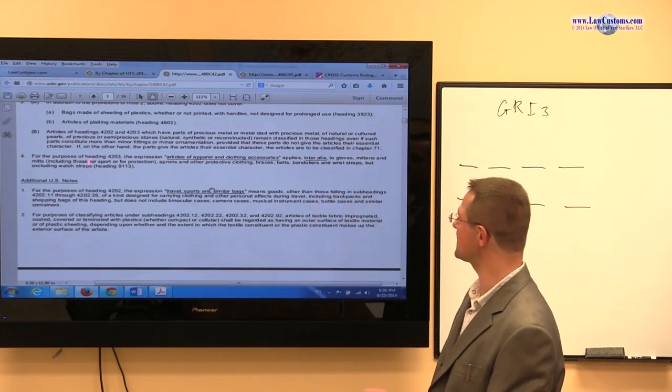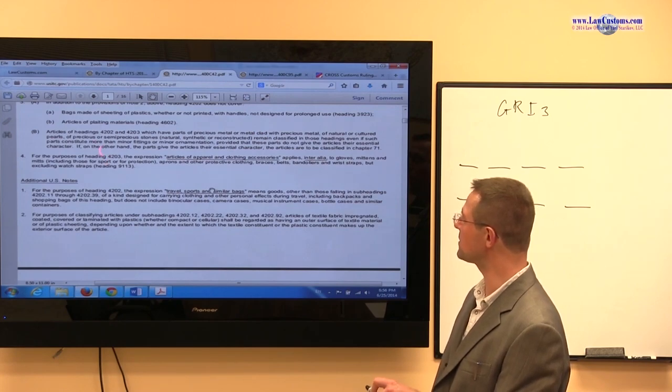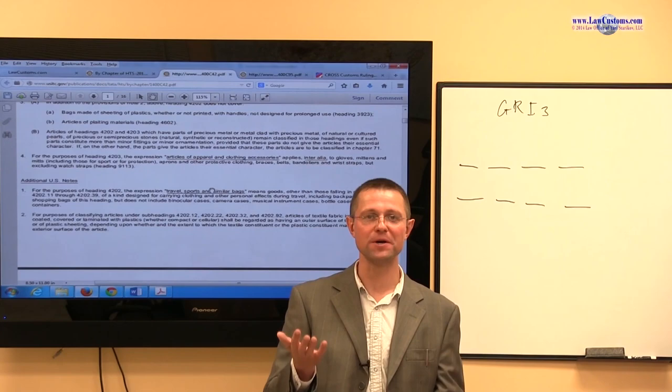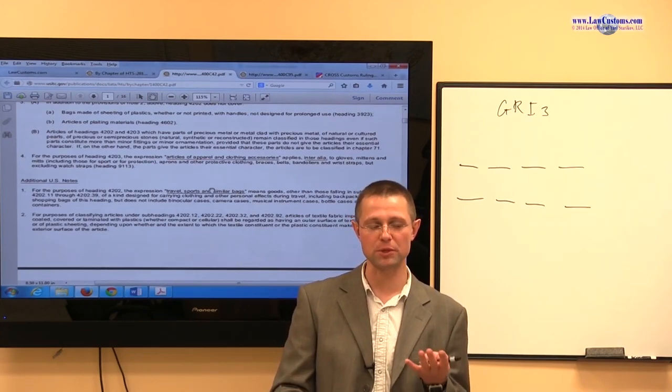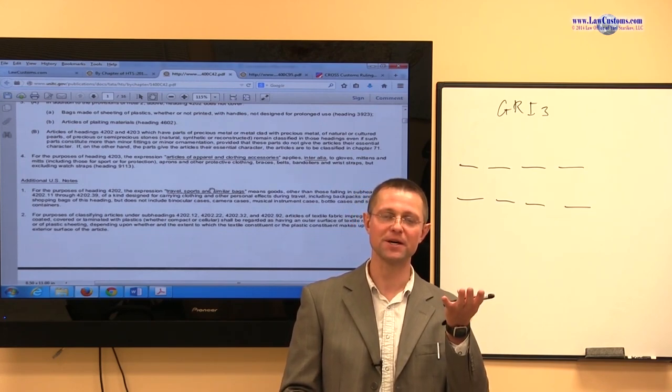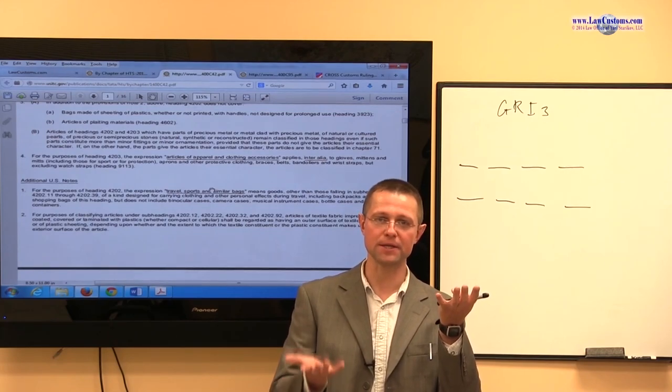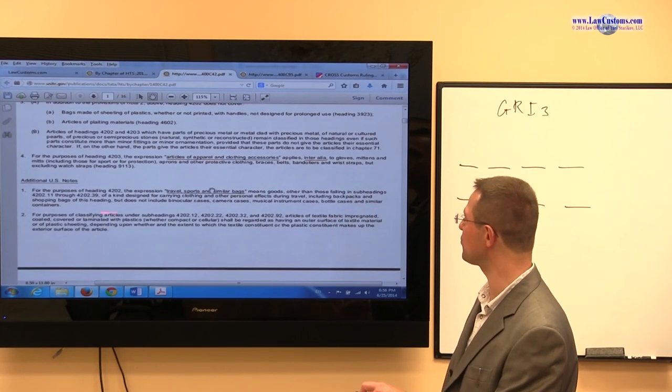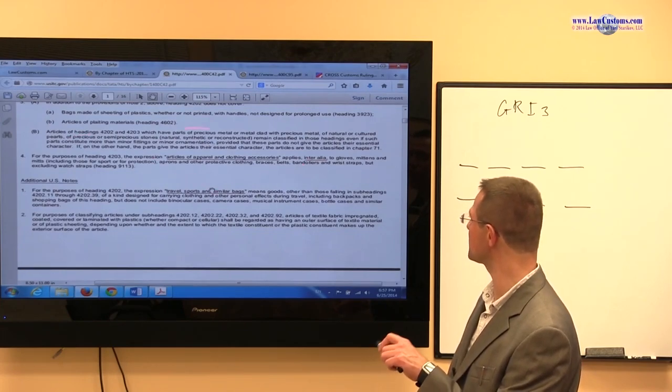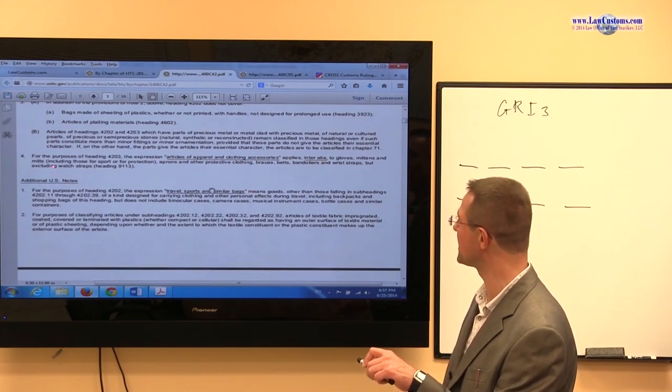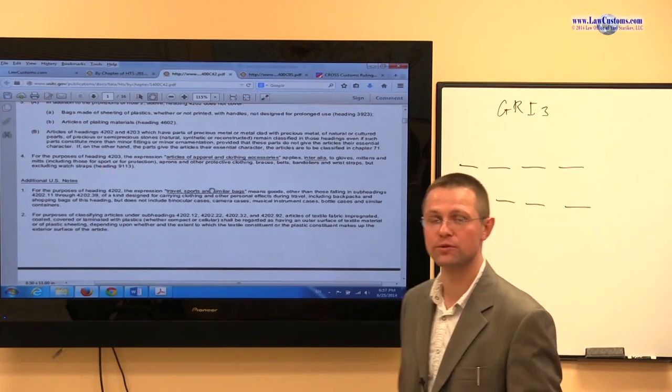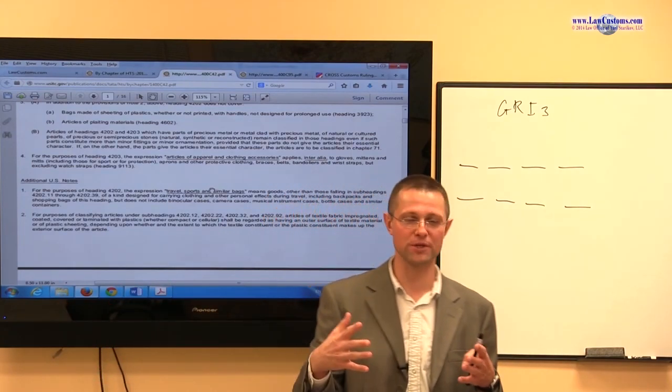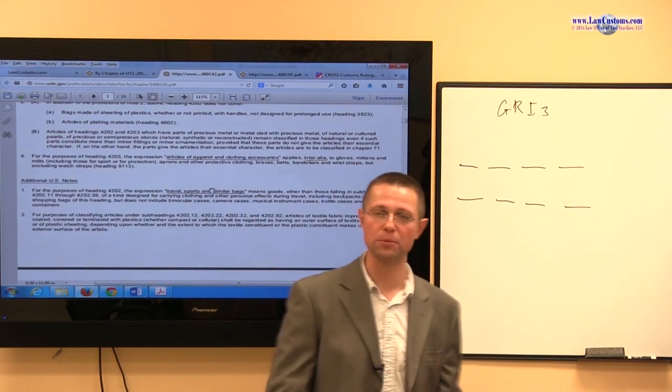So they say that if it says 4203, then whatever is included in 4203 includes those that are for sports or protection. So what does it mean? Yes, we have the potential for the GRI3 situation because potentially by looking at the terms of heading, they were classified as exercise equipment, as sports equipment. And they were potentially classified in articles of leather. But the note 4 of chapter 42 says, well, okay, since you have articles of apparel and clothing accessories which apply to those that are used for sports or for protection, that kind of sets a foot down so you do not need to go outside of GRI1, or you stay within GRI1 domain. And the chapter note 4 settles the question.